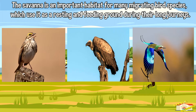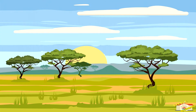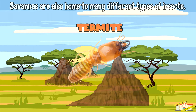The savannah is an important habitat for many migrating bird species, which use it as a resting and feeding ground during their long journeys. Savannahs are also home to many different types of insects, including termites, which play an important role in breaking down dead plant material.